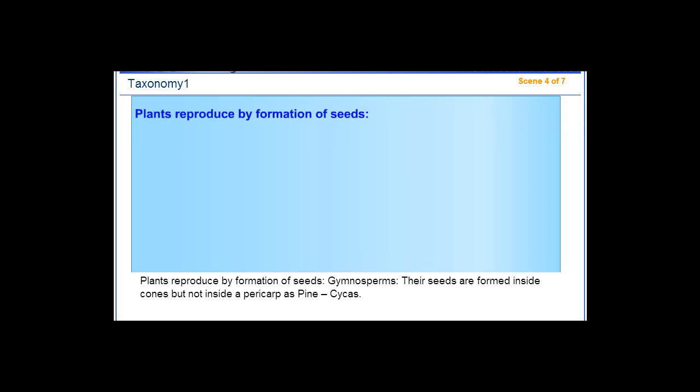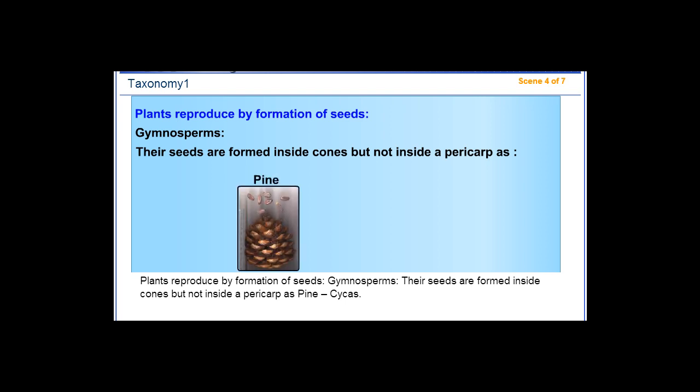Plants reproduce by formation of seeds. Gymnosperms have seeds formed inside cones but not inside a pericarp, such as pine and cycas.